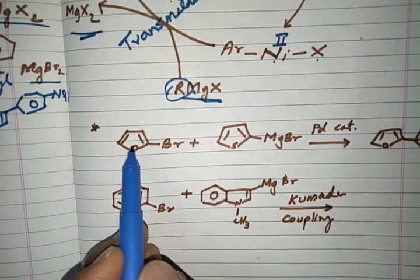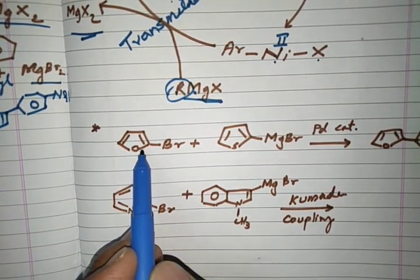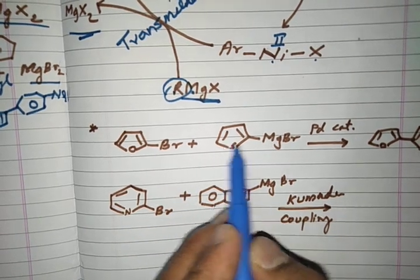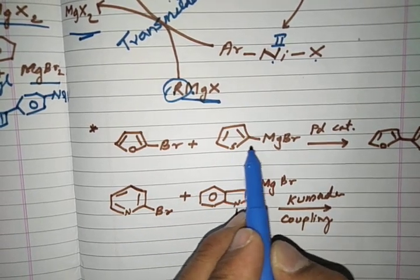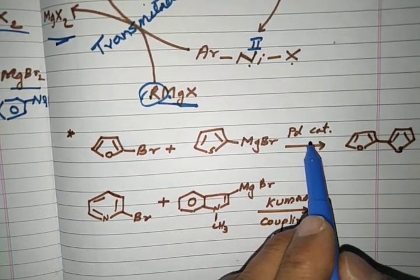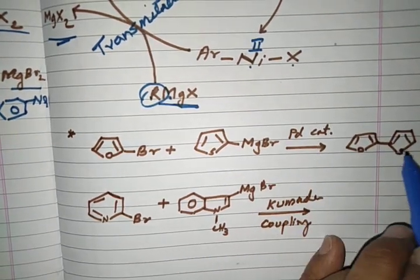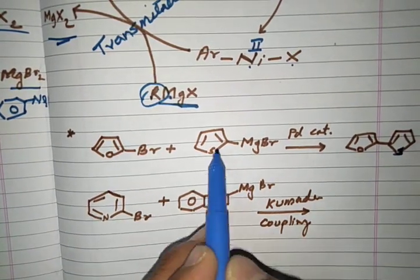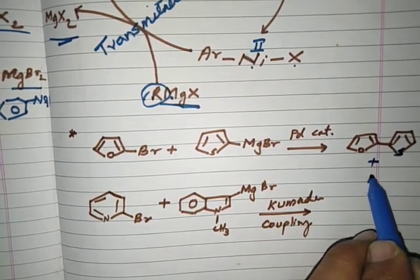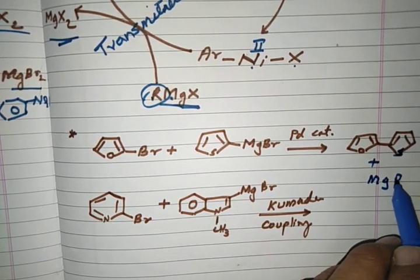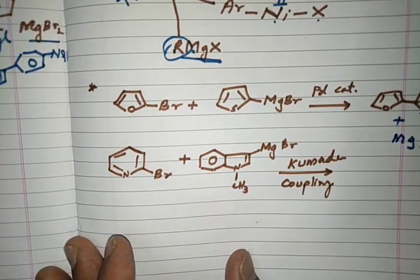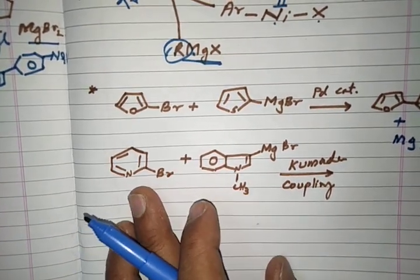Let us look at more examples. Here, 2-bromofuran is coupled with thiophen-2-yl magnesium bromide using a palladium catalyst. There is coupling between the thiophene and the furan units, and the side product is MgBr₂.